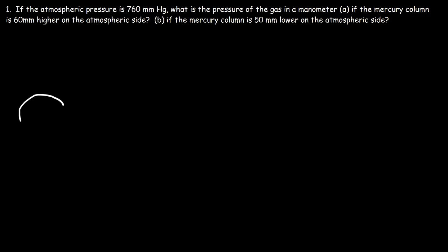How would you answer this question: if the atmospheric pressure is 760 millimeters of mercury, what is the pressure of the gas in a manometer if the mercury column is 60 millimeters higher on the atmospheric side? Let's find out — let's draw a picture.